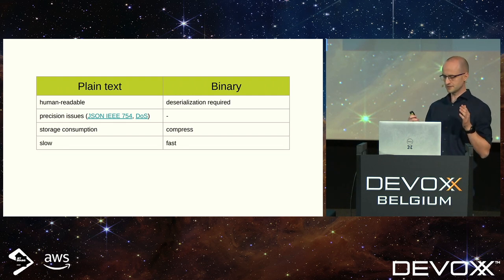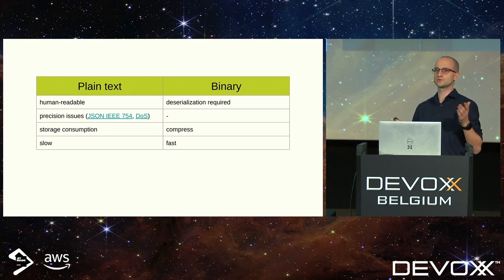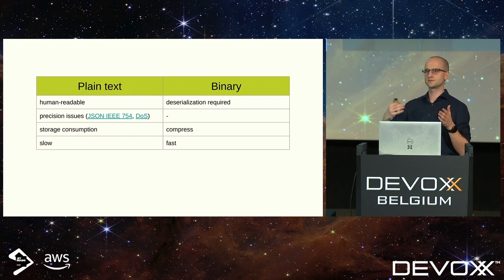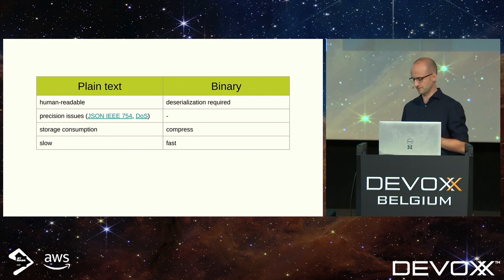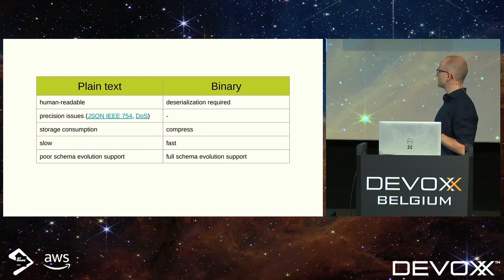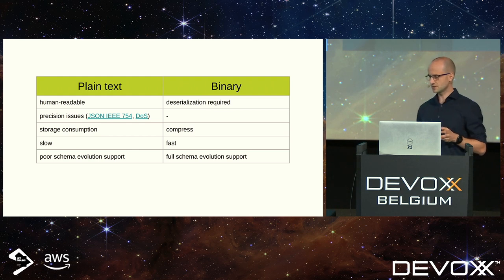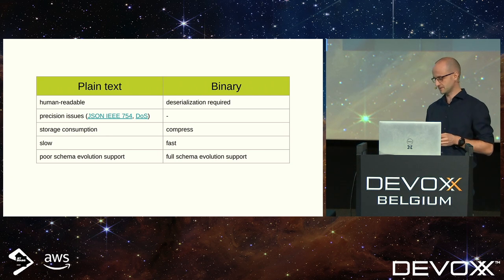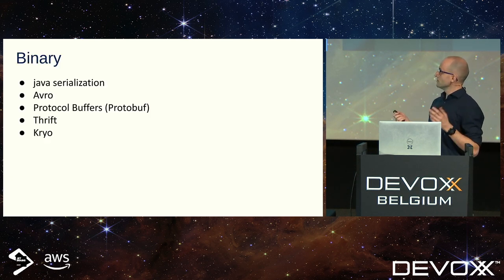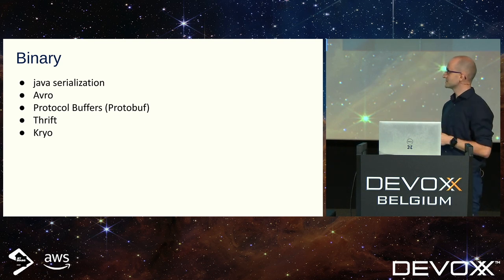All benchmarks are pretty consistent — binary serialization is much faster than plain-text serialization, which shouldn't be a surprise, because plain-text serialization requires a lot of additional steps to serialize and then deserialize. And really importantly, with binary serialization, schema evolution support is on a completely different level than with plain-text serialization.